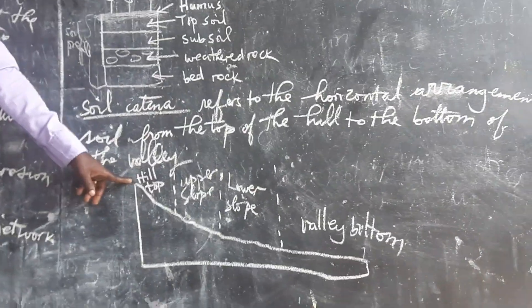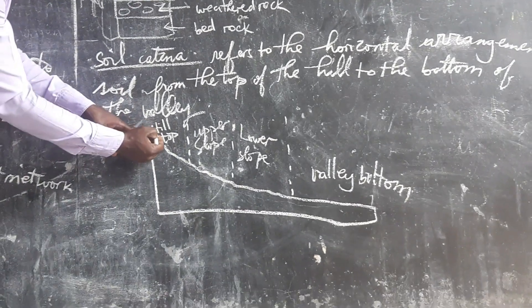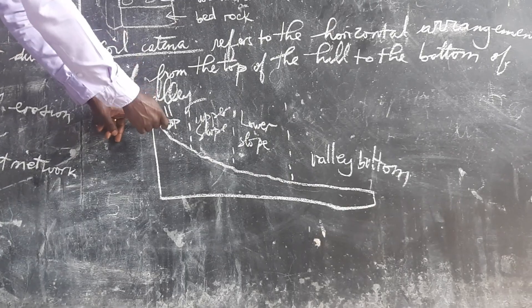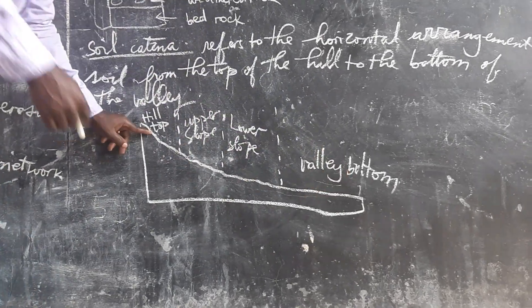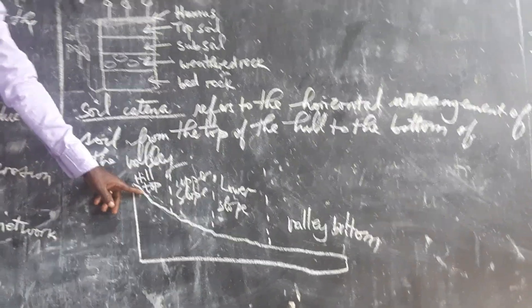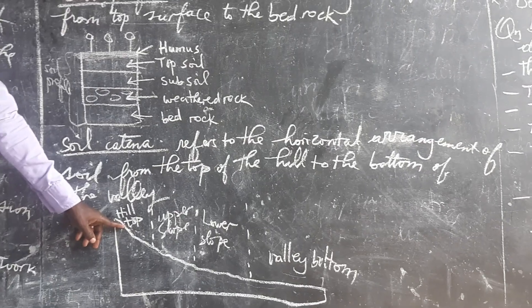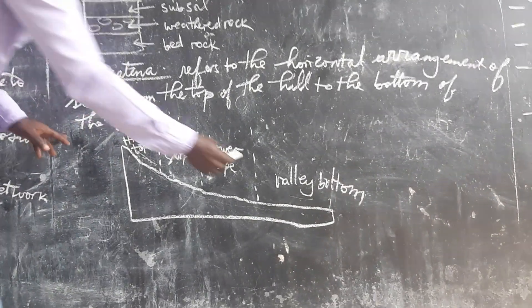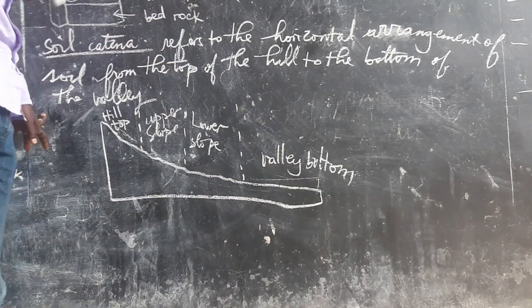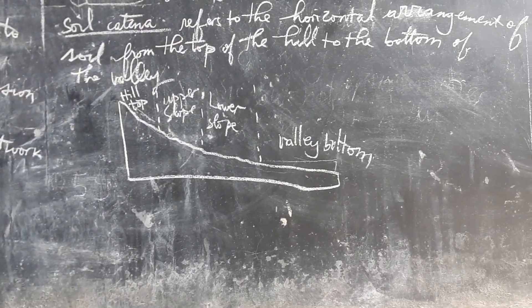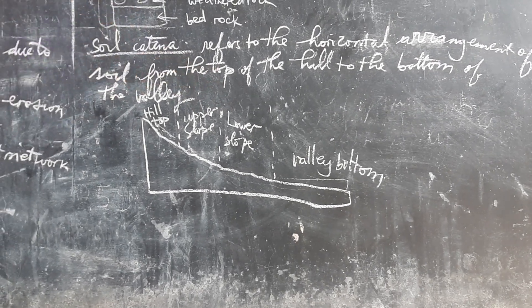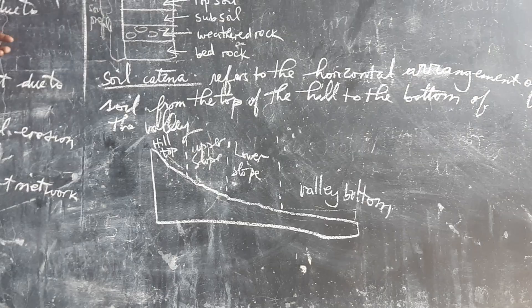So meaning that the soil at this hilltop side, it is thin, while at the valley bottom, the soil is too deep. So meaning that here we have shallow soil, while here on the valley bottom, we have deep soil. So that makes the difference in the thickness of the soil around that area.